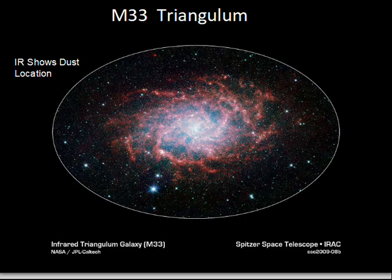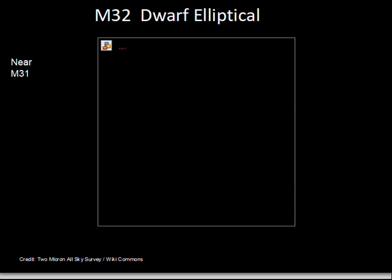The Triangulum galaxy — here I chose an infrared view from the Spitzer Space Telescope, showing the location of dust in the galaxy. It is again a spiral galaxy, with this dust forming spiral bands. It has about 15 times less mass than the Milky Way galaxy — just a rough number.